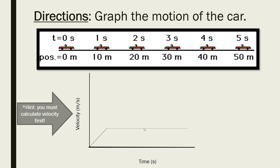At zero seconds the car is not in motion. From zero to one second, the car covers 10 meters, so velocity increases in the first second. At second two, the car has traveled 20 meters; distance divided by time gives 20 ÷ 2 = 10 meters per second — the same as at one second, so we see a straight line. At three, four, and five seconds, the car maintains an average velocity of 10 meters per second, indicating constant velocity from one to five seconds.